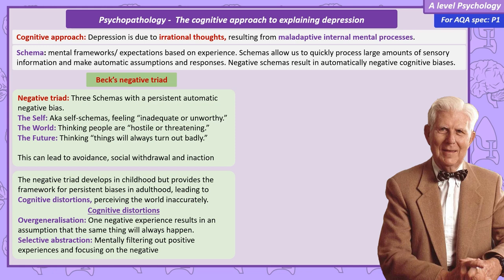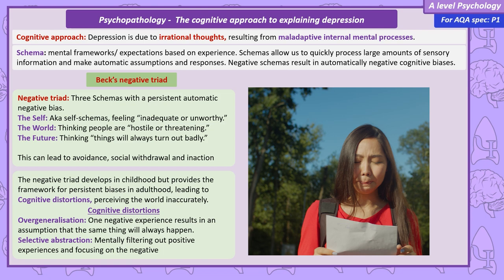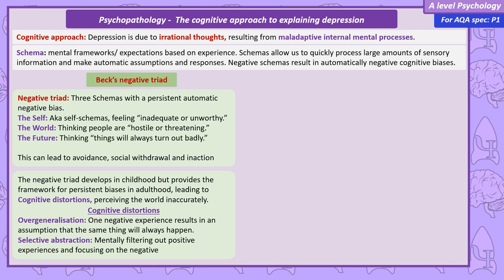Beck calls these biases cognitive distortions. Overgeneralisation is when an individual has one negative experience and assumes this will always happen. So perhaps a student starts A-levels, fails a first class test in one A-level subject, and now assumes they'll always fail on every future test in every subject. Selective abstraction involves focusing on one detail out of context — a process of mental filtering, only focusing on the negative.